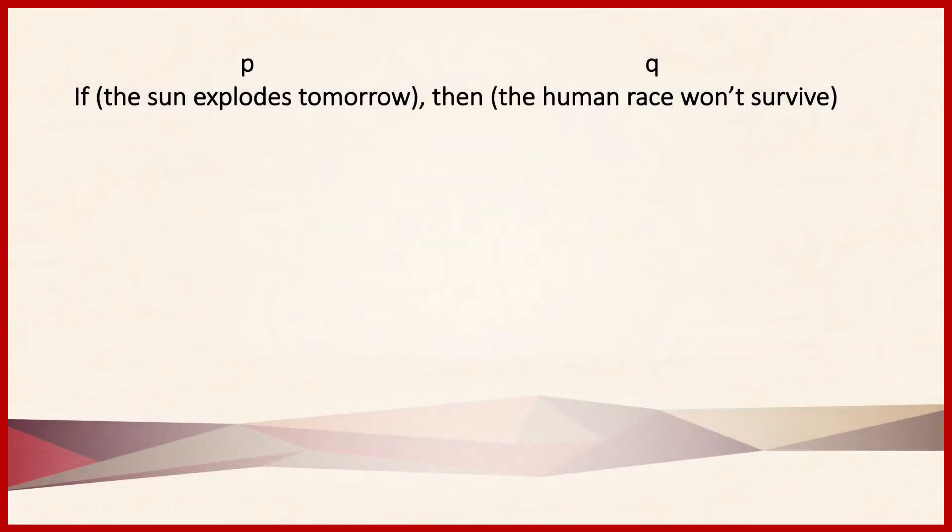In assessing the validity of arguments that employ hypothetical propositions, we want to first write the arguments in standard form. So we need to know how to label them. Here's our proposition again that we started with. Notice that we have put parentheses around both the antecedent and the consequent and labeled them P and Q.